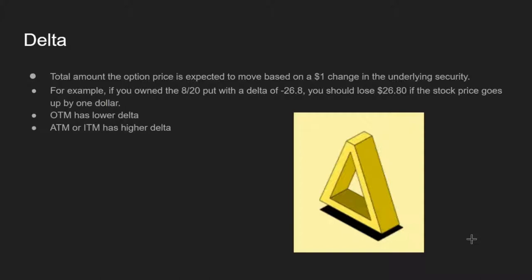For example, if you had an August 20th put with a Delta of negative 26.8, you would lose $26.80 on the contract price if the stock price goes up by one dollar. Vice versa with a call — if you had an August 20th call, the Delta would be positive 26.8, so you should gain $26.80 if the stock price goes up by a dollar.